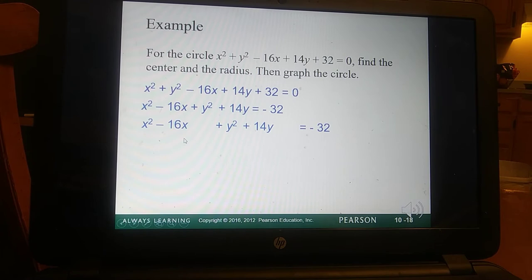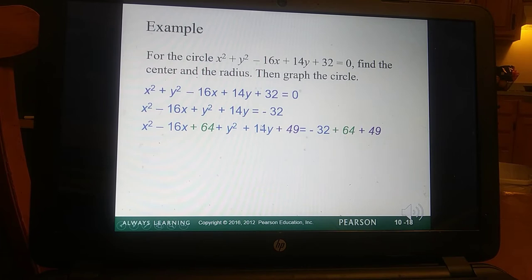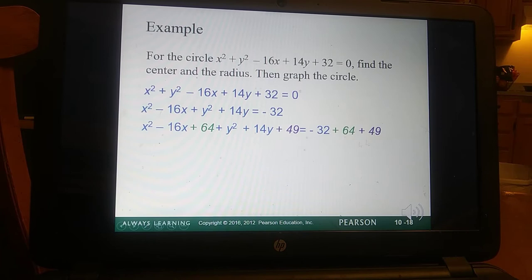So here, we have 16X. So remember, you divide it by 2, square it. So it would be 8, and then squared will give you 64, and the 64 would be added to the other side as well. We have to do everything on one side that we did on the other. Here, you divide by 2, you get 7. Square it, you get 49. So we're also adding 49.